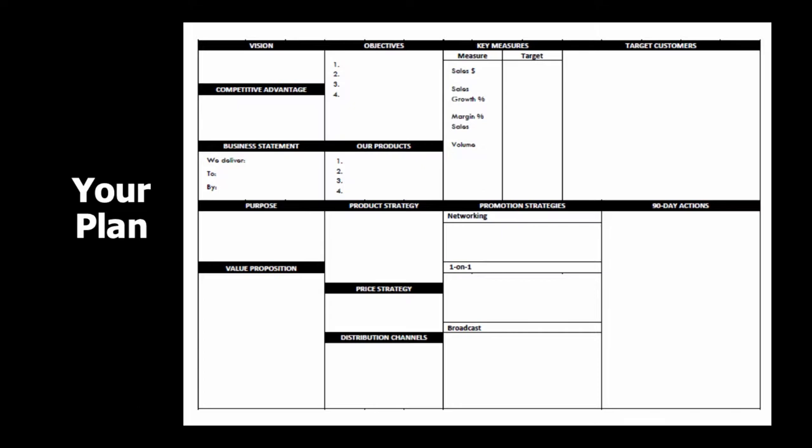I'm going to assume in your plan that you've done things like your vision, objectives, and your business statement — what you deliver, who you deliver it to, and how you do that. I'll assume you understand what your products are and have some key business measures you're working to. The rest we're going to work through together.